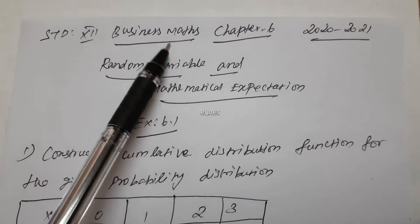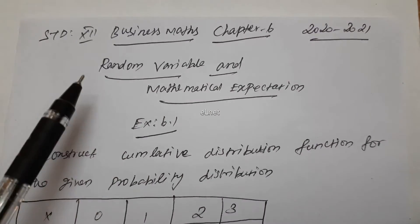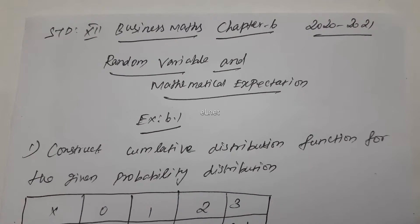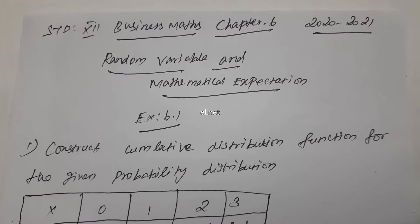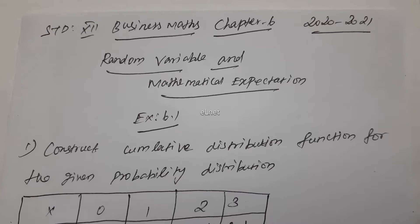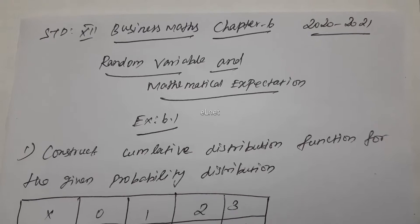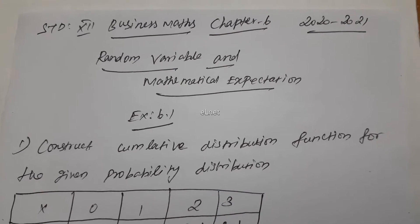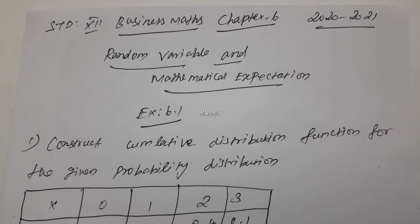12th standard Business Maths chapter 6, exercise 6.1. Last class we completed the fifth chapter. Now sixth chapter: Random Variable and Mathematical Expectation. We'll start solving Exercise 6.1.